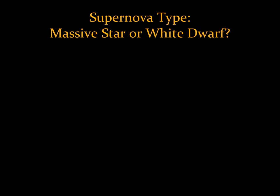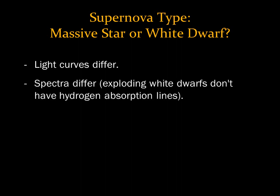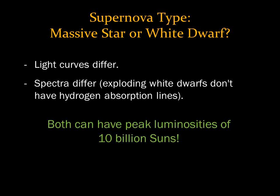Astronomers can distinguish between the two types of supernovae by studying their light. Both types shine brightly, with luminosities of about 10 billion times that of the Sun. But luminosities of white dwarf supernovae fade quickly over the first few weeks, and then decline more gradually, while the decline in brightness of a massive star supernova can be more complicated. The spectra are also different — a white dwarf doesn't have hydrogen, so you won't see any absorption lines in a white dwarf supernova spectrum.